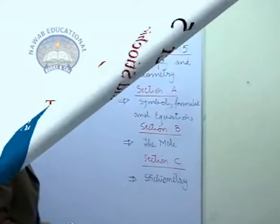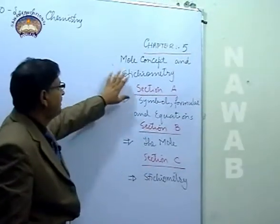This is chapter number five. The name of this chapter is mole concept and stoichiometry.